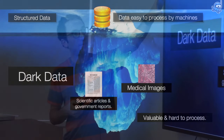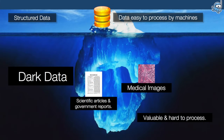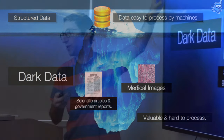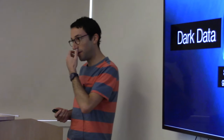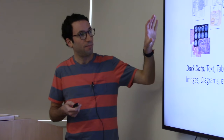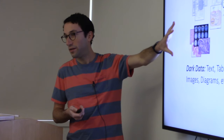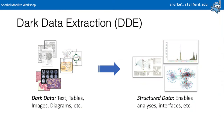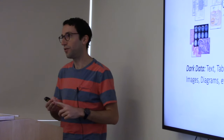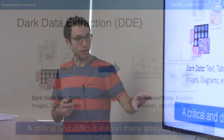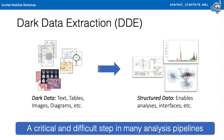One reason we're excited about this problem, besides the complexity, is the fact that there's a ton of data that is not in a nice structured format like a database, a graph, or an Excel spreadsheet — and therefore is really hard to process, but contains a lot of valuable signal for various types of modeling or application goals. Very broadly defined, this problem is taking unstructured data — like text, tables without a predefined schema, images, diagrams — and turning it into structured data, usually a database, which you can then plug into the decades-old stack of modeling, visualization, and other computing tools. This is a critical and difficult step in many analysis pipelines.